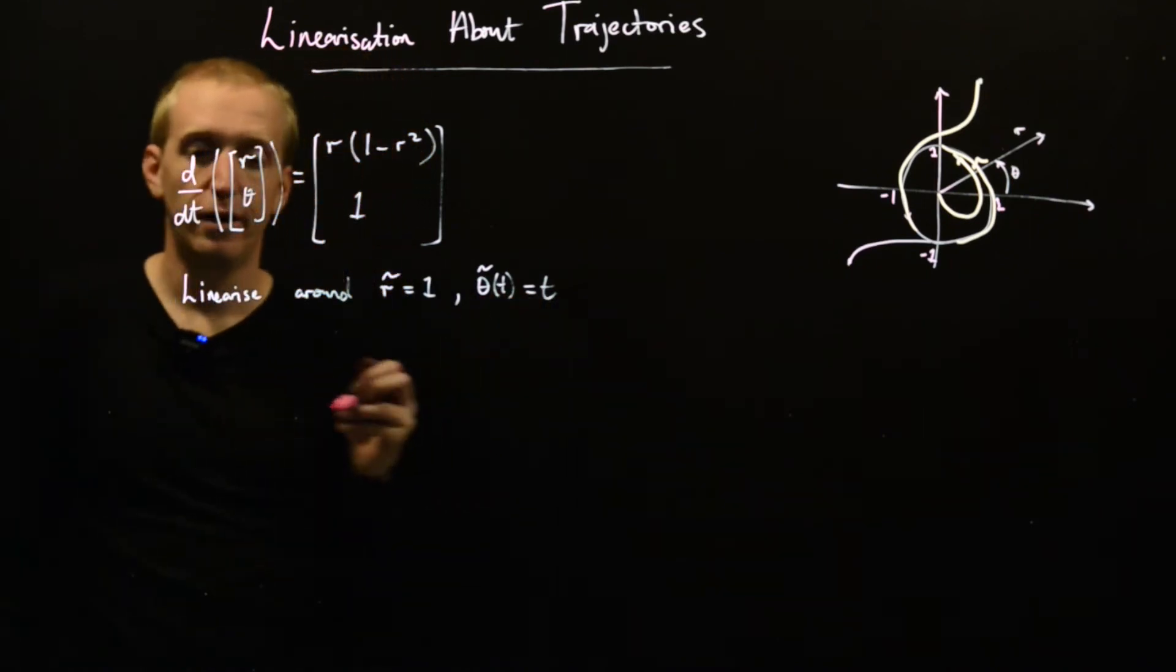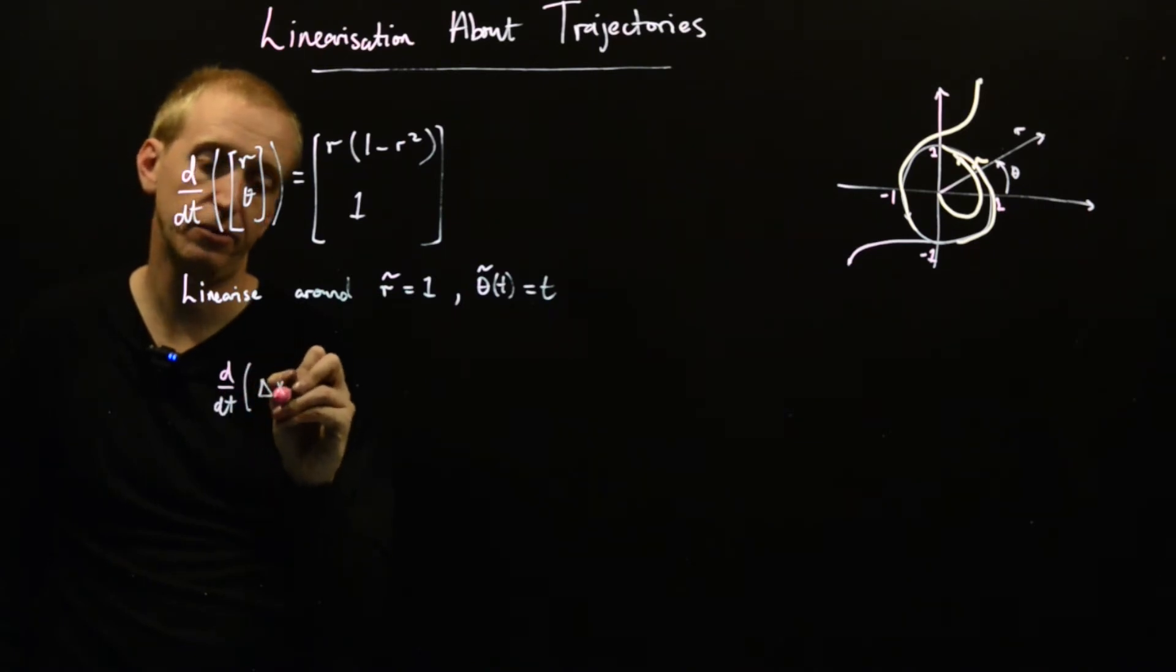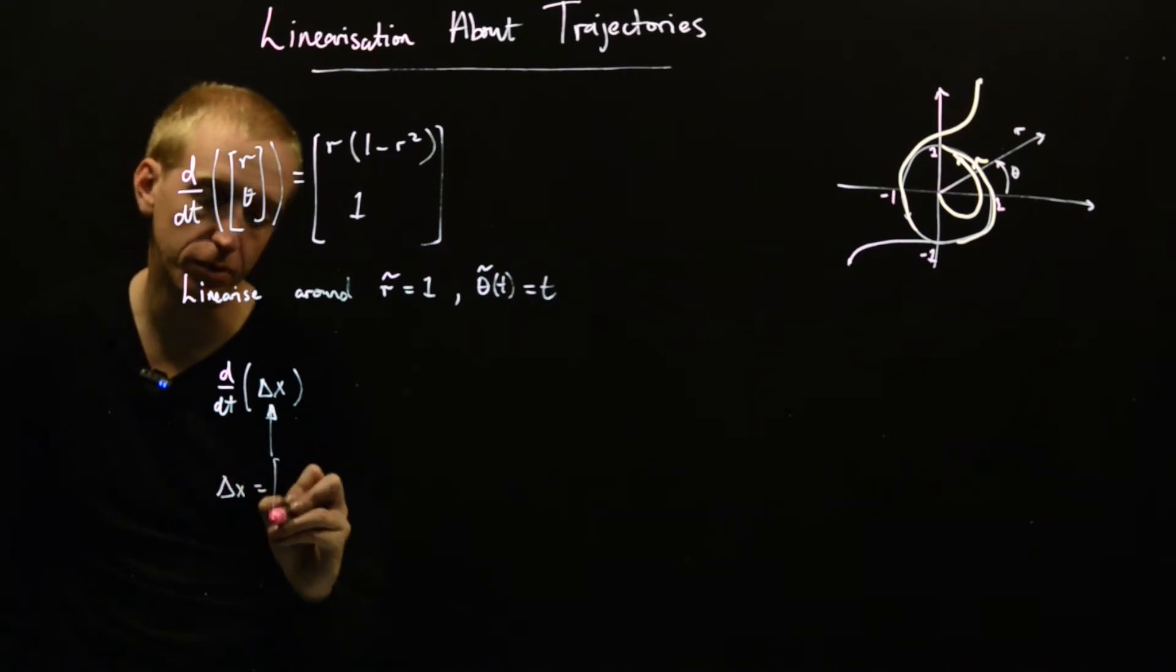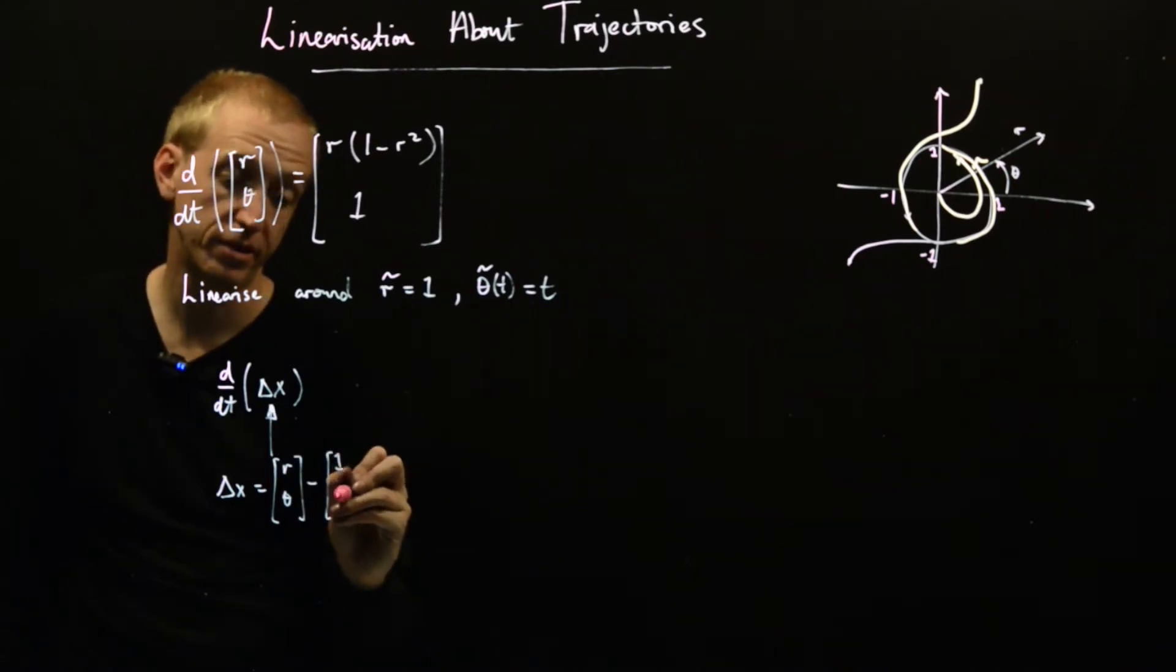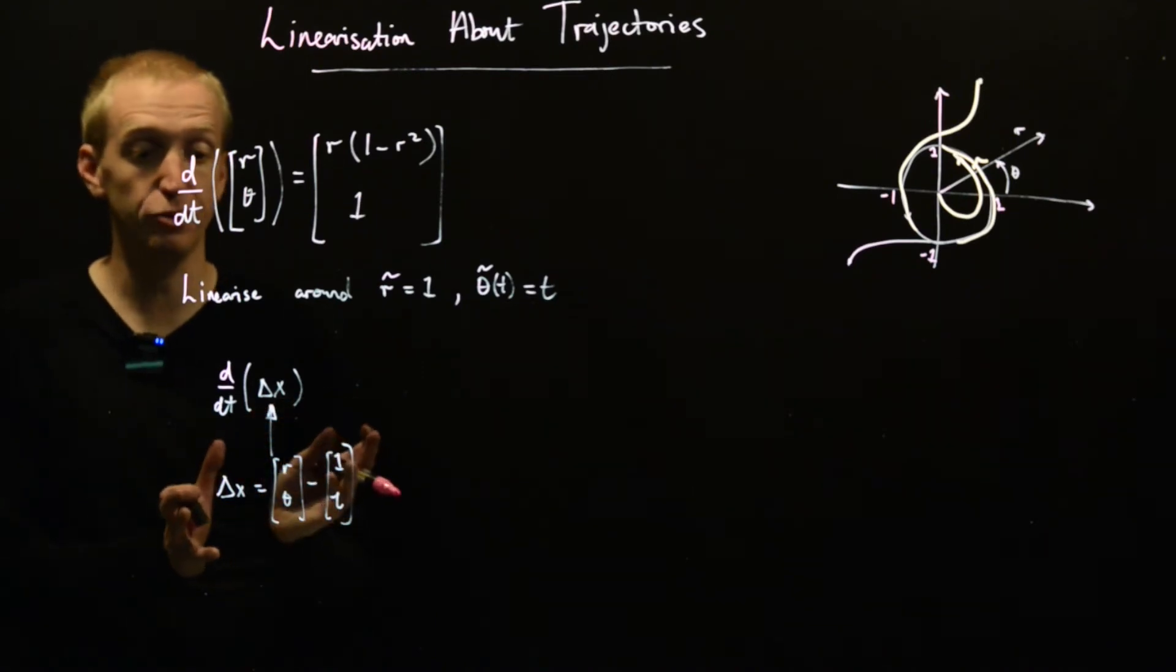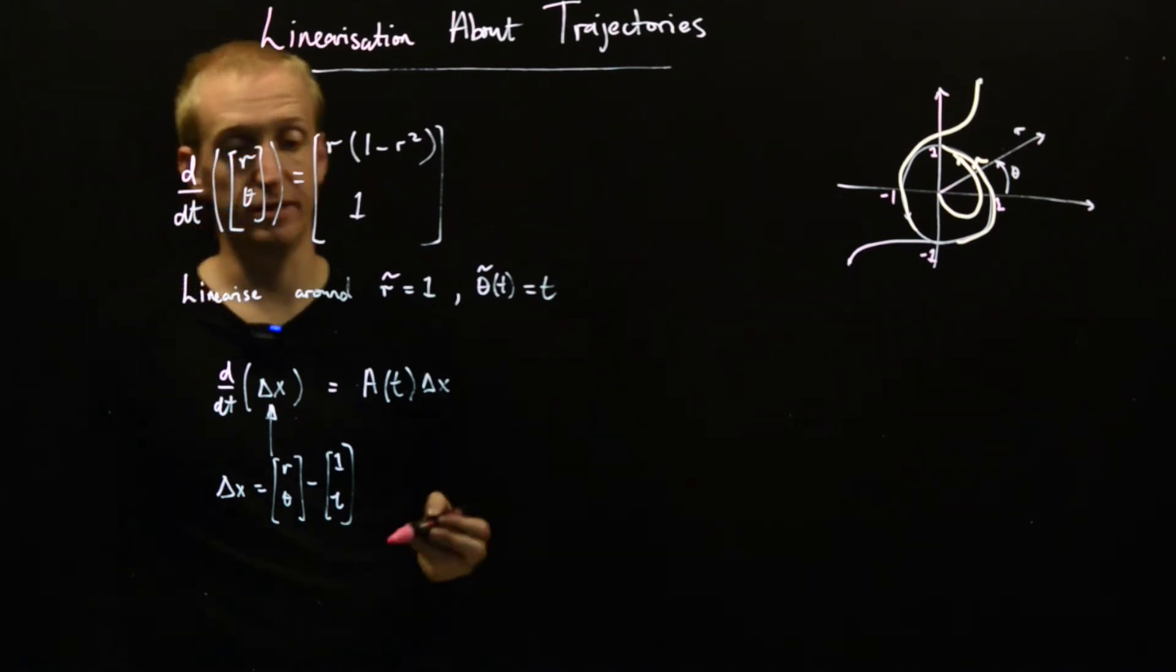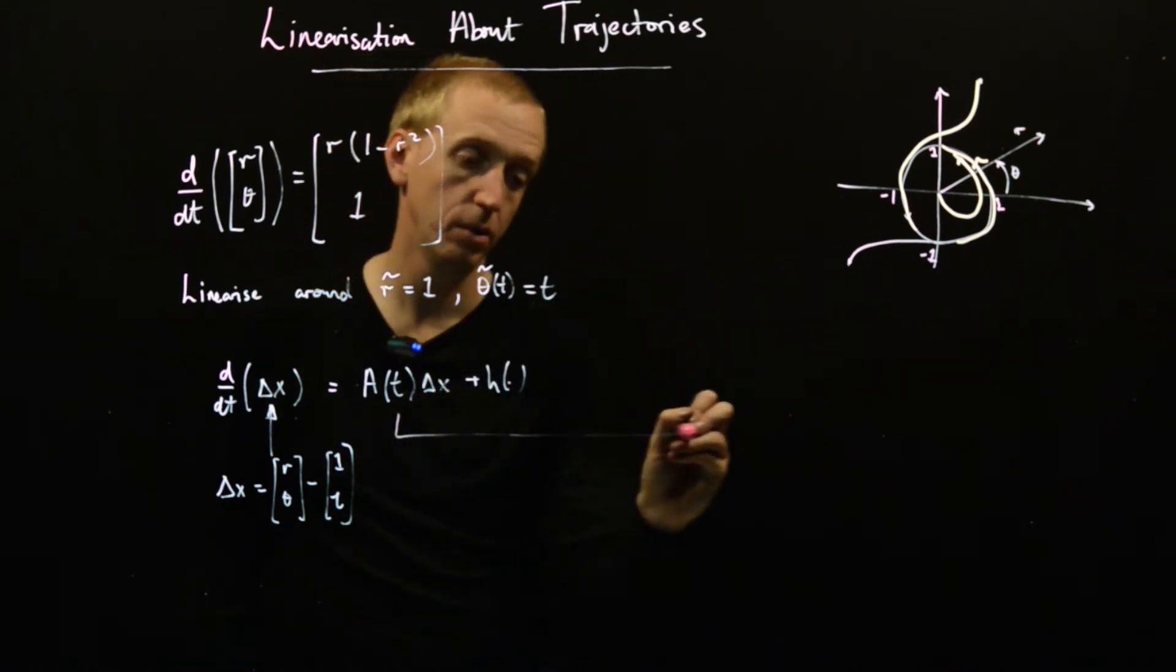Let's just do it. When we linearize, we find that d/dt of delta x, measuring our deviations from our equilibrium trajectory. So delta x here is equal to [r, theta] minus [1, t]. This is our equilibrium trajectory, and this is our shift to put our deviations around that trajectory. This equals some matrix A(t) multiplied by delta x. There's no input, and then there would be some higher order stuff. Let's just focus on computing A(t).